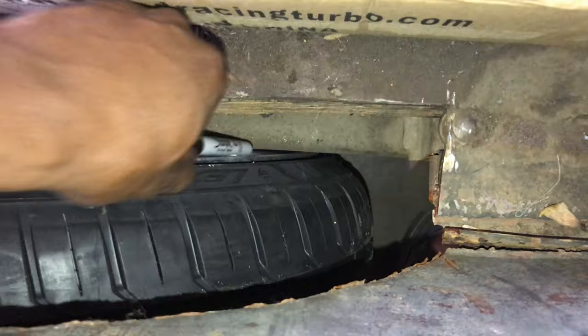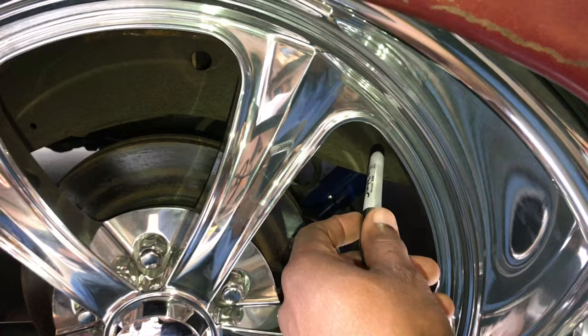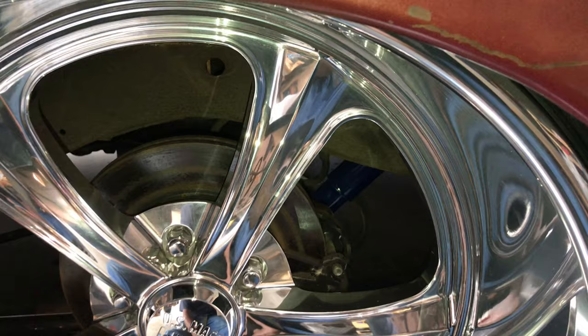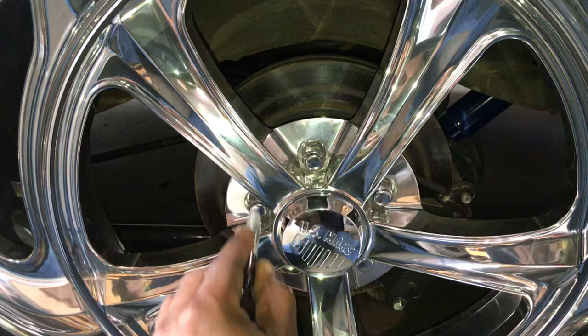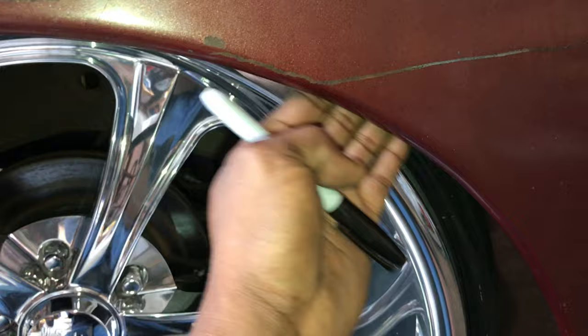Another option you have versus notching it out on the frame to clearance the back is to actually move the wheel out. You can do that by adding a spacer, a hub spacer right here. You could probably go with like a quarter inch and then move it out enough, but I'm gonna notch it out so we have clearance on both sides because I don't like the fact that it would bring it out here.